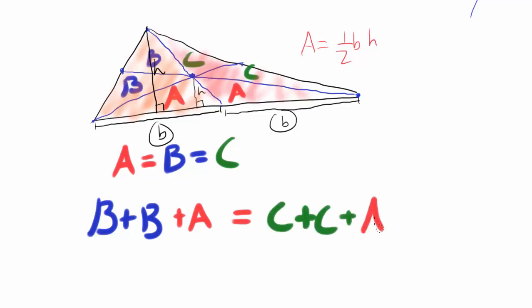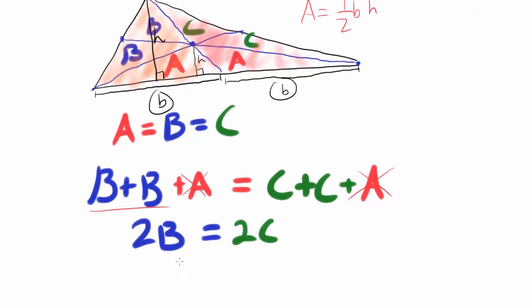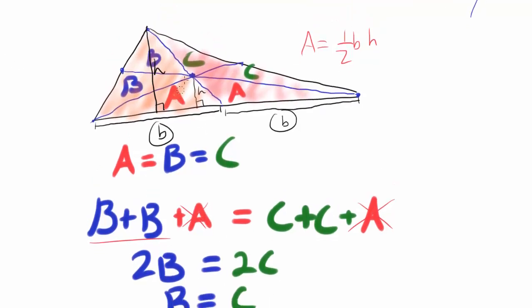Since the orange and red triangles have equal area, we have: 2b + a = 2c + a. The a's cancel out, leaving 2b = 2c. Dividing both sides by two gives us b = c. So b is indeed equal to c.